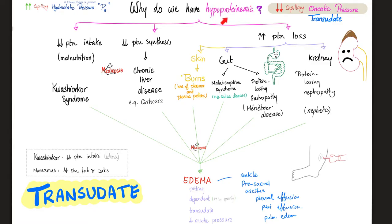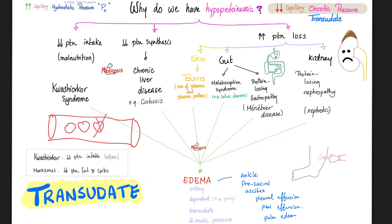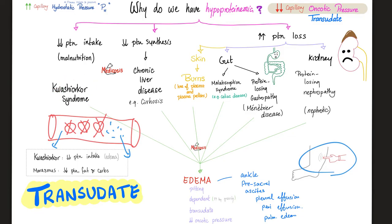What happens if my serum protein drops? If your protein decreases, you lose the force that keeps fluid inside the vessels — oncotic pressure. With no proteins, fluid leaks to the outside, giving ankle edema. Additionally, less fluid remains in the vessel, meaning less blood perfusion to the kidney, heart, brain, etc. Causes of low protein include malnourishment such as Kwashiorkor syndrome, or liver disease like cirrhosis, or protein loss through third-degree burns.